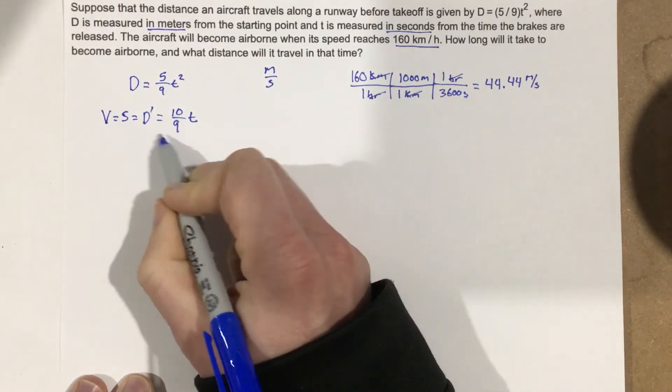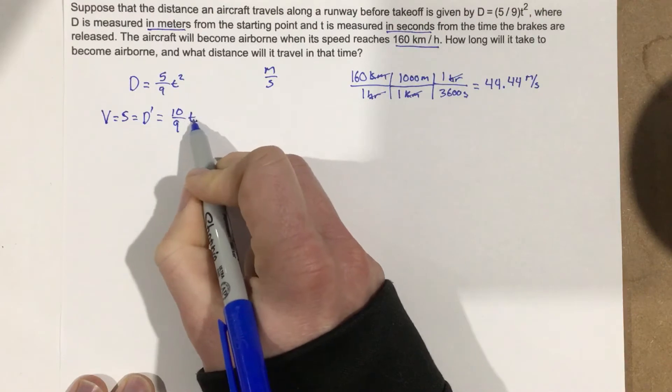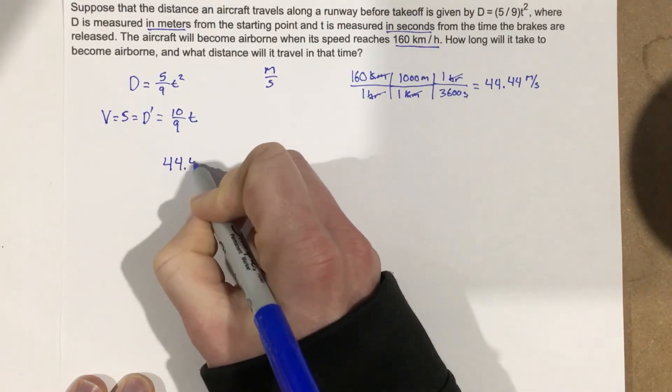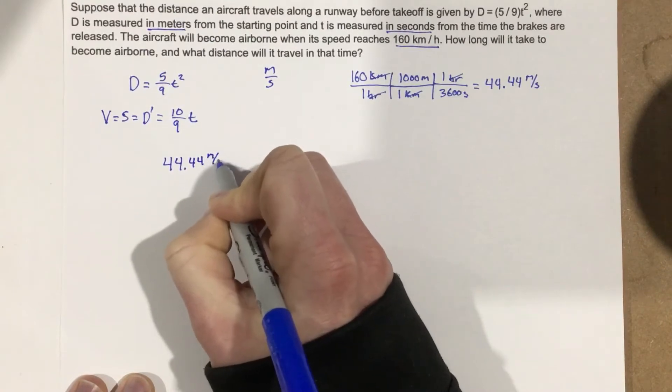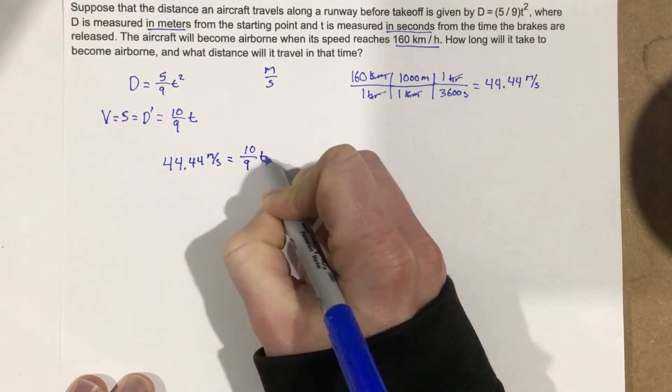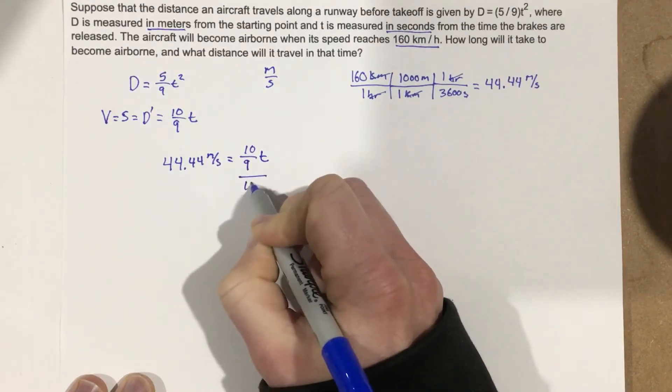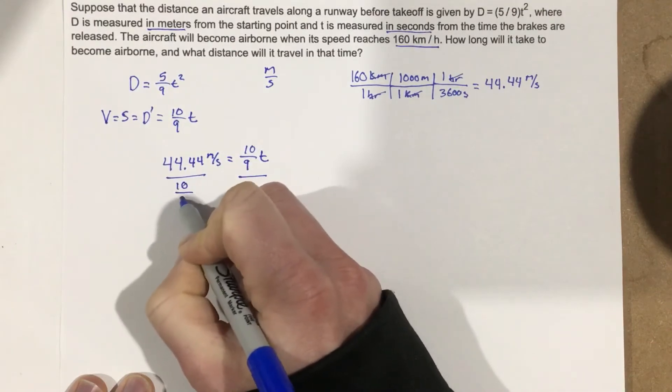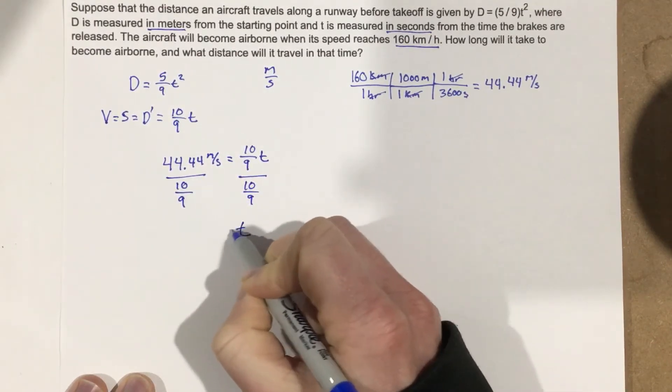Now we have this equation here that says our speed is going to equal 10 ninths t. So we can solve for t as long as we plug in our speed, which is 44.44 meters per second equals 10 over 9t. Let's divide by 10 over 9. Divide this by 10 over 9 and that's going to leave us with t equals.